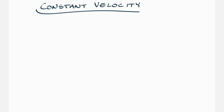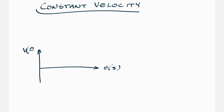In this video we want to talk about constant velocity motion and understand some of the equations of that kind of motion. To start, let's draw a v versus t graph with velocity in meters per second versus time in seconds.